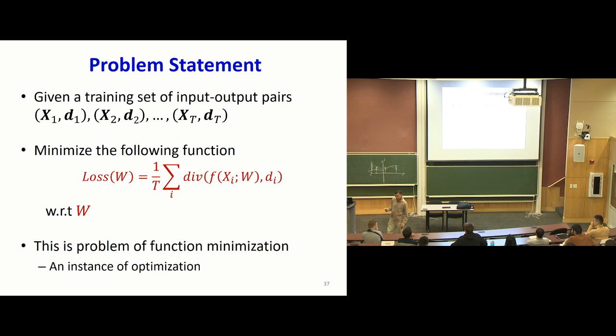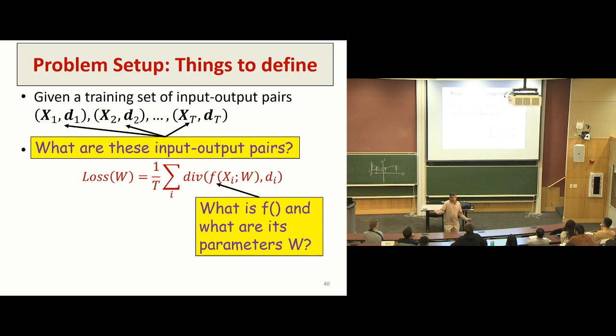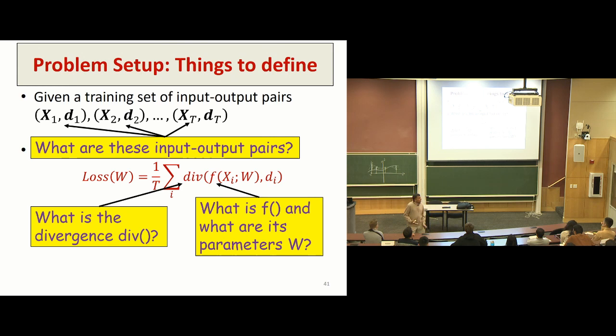But there are many things which have not been well defined that must be specified. What are these input-output pairs? The neural network is trying to perform a task, which means you have to specify these input-output pairs. What is the function that you're minimizing? What is this divergence? All of these have to be defined because if you don't really define these, then you have nothing to minimize. Everything must be specified.